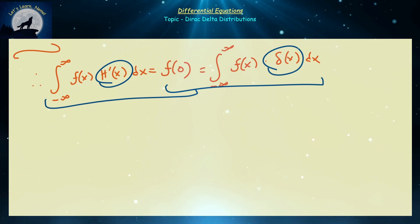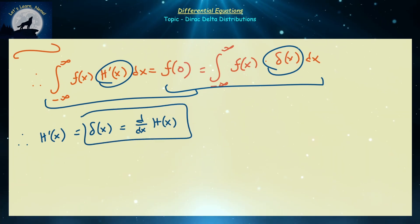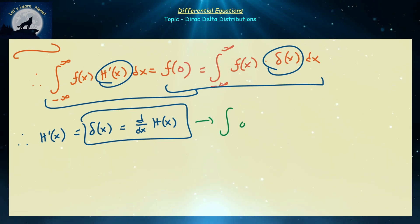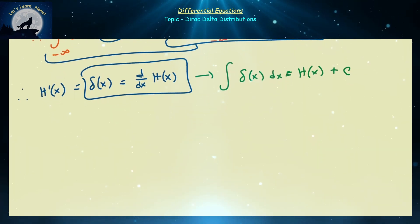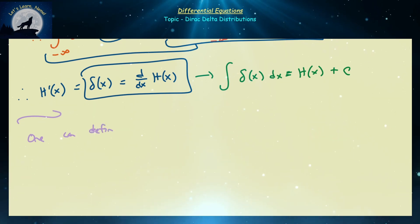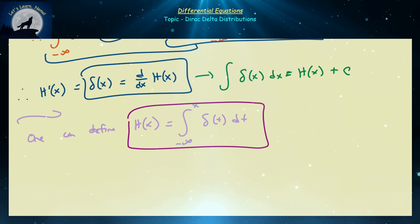So H'(x) = δ(x), meaning the integral of the Dirac delta distribution is the Heaviside function plus an arbitrary constant C. One can also define the Heaviside function as H(x) = ∫₋∞^x δ(t) dt, rather than as a piecewise function. This is the fundamental connection between these two objects.